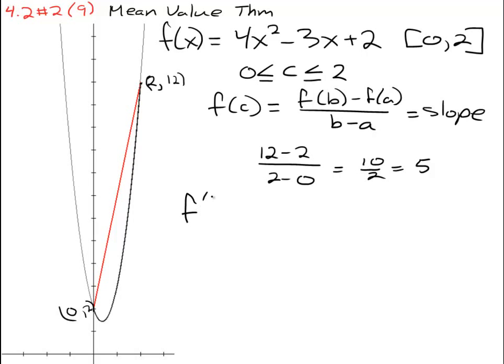So f prime of x equals very simply 8x minus 3. So that is the slope of the tangent line and we just know that that slope has to equal the slope of the secant line at some point. So we set them equal: 8x minus 3 equals 5, 8x equals 8, x equals 1, and 1 is within our interval so that is our solution.